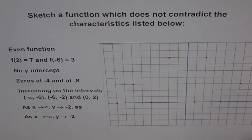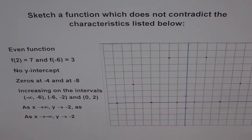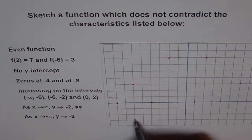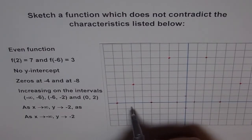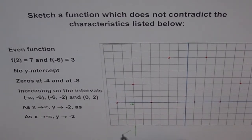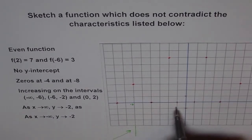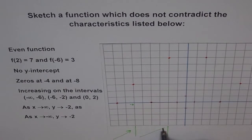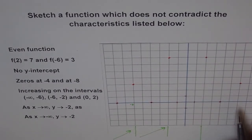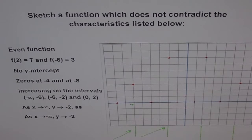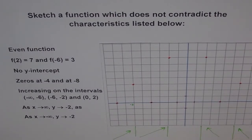We are increasing on the interval (-∞, -6), so approaching from the left toward x = -6 the function is going up. Then from -6 to -2 it is also increasing. From an even symmetry point of view, the function should also be increasing on the corresponding right-side intervals. So the shape on the left should mirror the shape on the right.